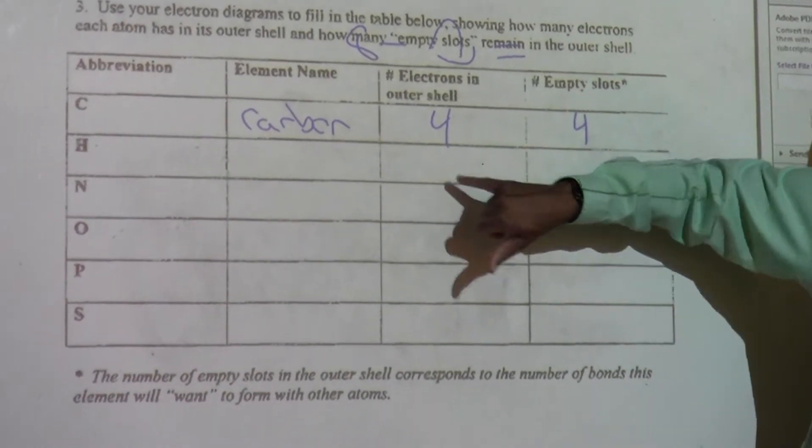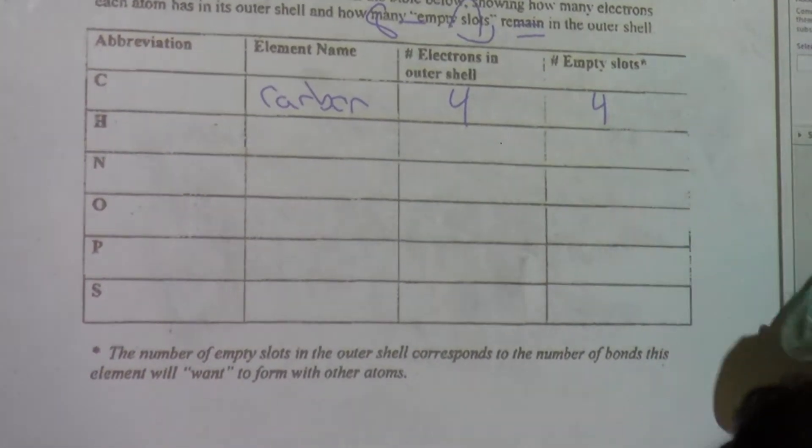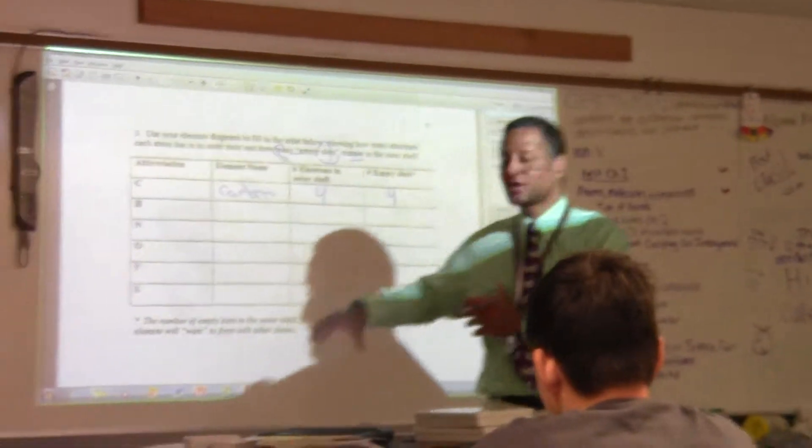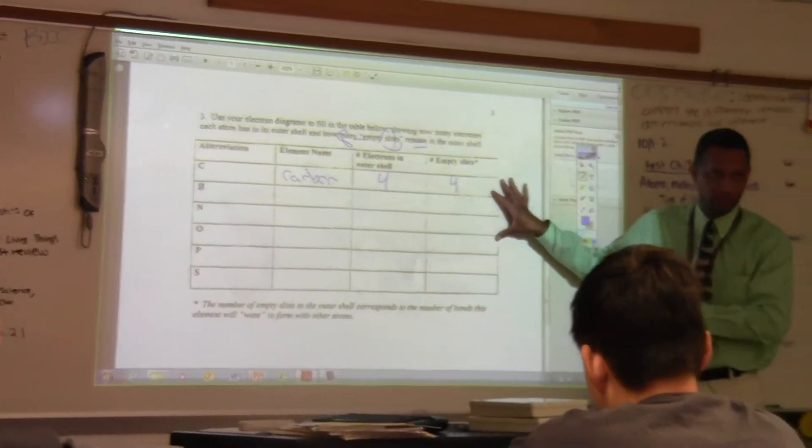The only time you don't do 8 is which atom up here? Hydrogen. Hydrogen, you'd say 2 minus that. It's the maximum capacity or possibility of that energy ring minus the number of electrons that are in that energy ring to figure out how many are left over.